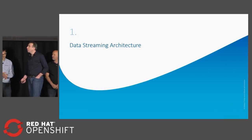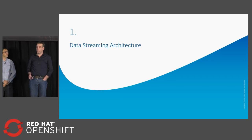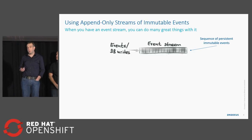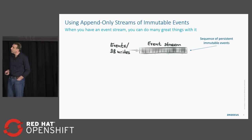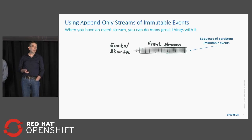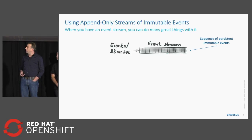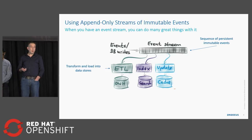I will introduce you to what is data streaming architecture, or what is commonly called stream processing or real-time data processing. It's a new kind of architecture that is event-driven, so everything is based on an event log. You need to have this persistent event log where every event that your application is logging is persistently stored in a strongly sequenced manner.